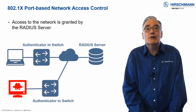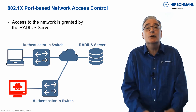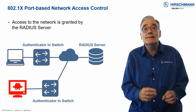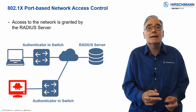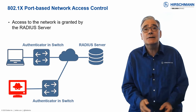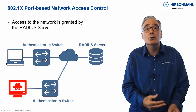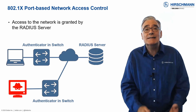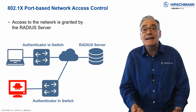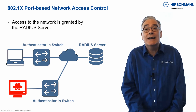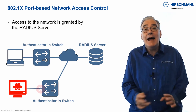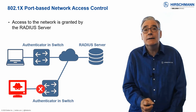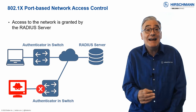Earlier, we looked at using RADIUS authentication to allow a user to connect to a switch. A very similar technique is widely used to allow a device, such as a PC, to access a network. When a PC attempts to connect to a network, the switch uses a protocol called 802.1x to put the client on hold. The switch checks with an authentication server, such as a RADIUS server, whether the PC is allowed to connect to the network. The client is then allowed or denied network access. The client could also be assigned to a specific VLAN, for example, a guest VLAN.